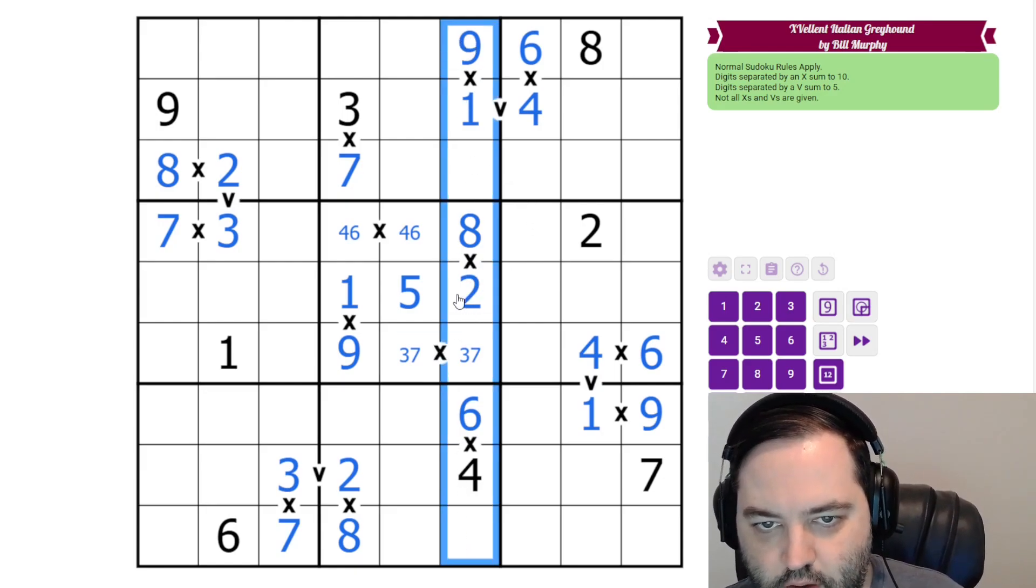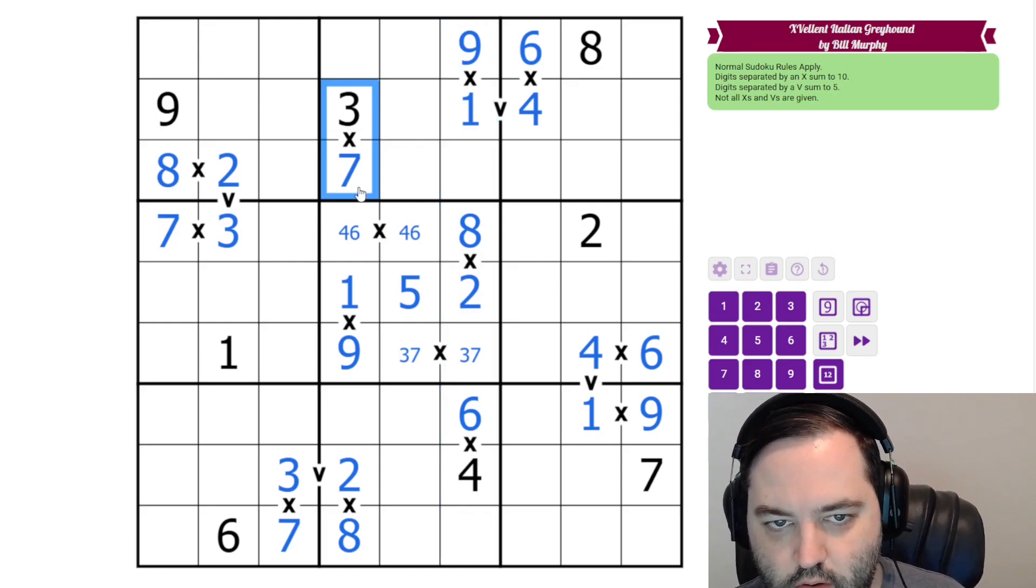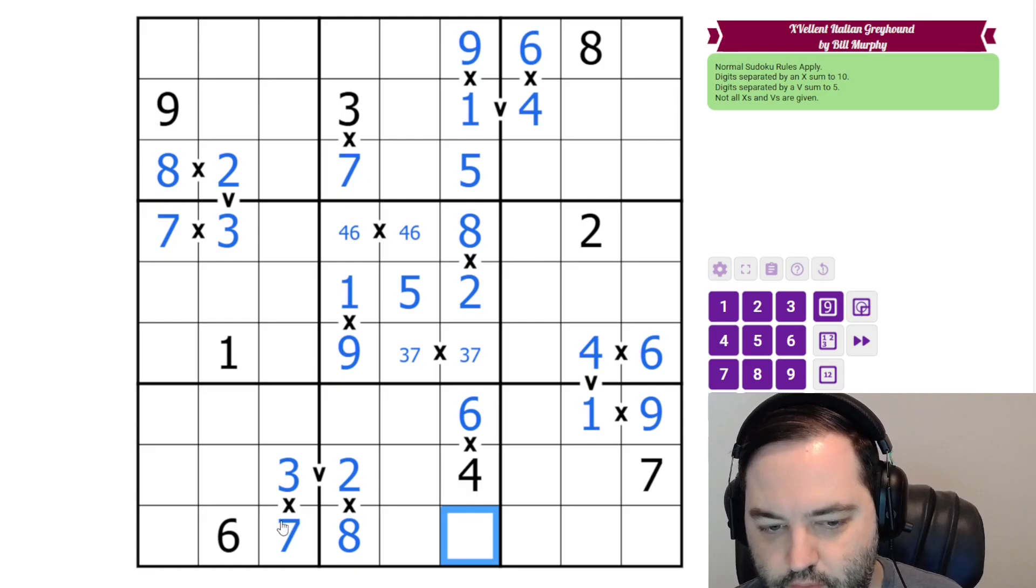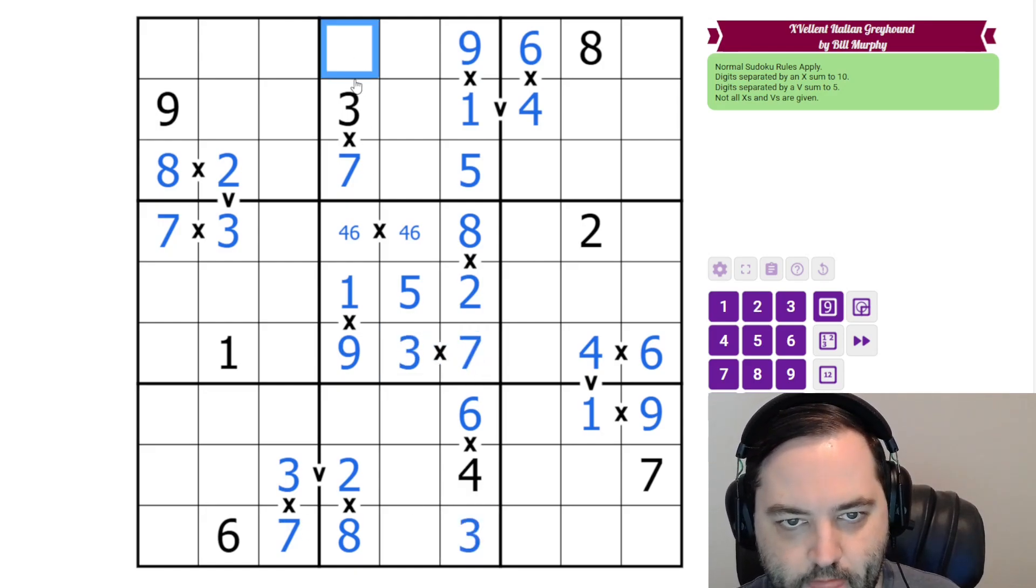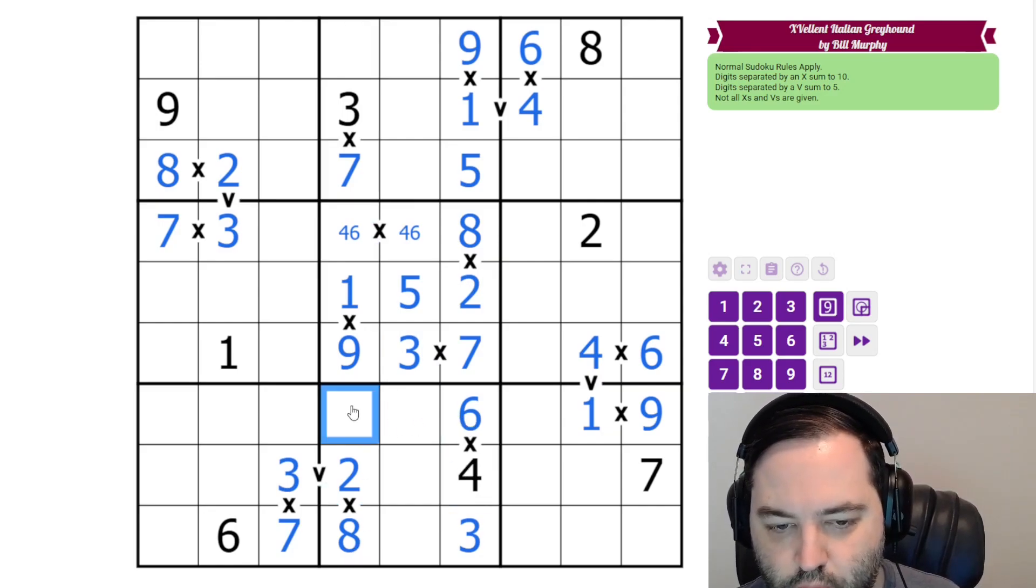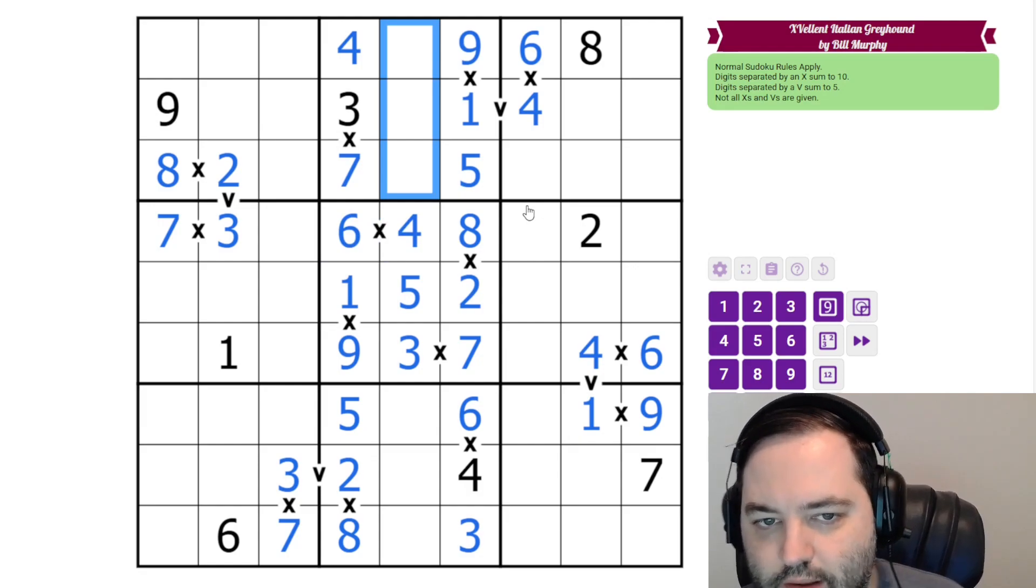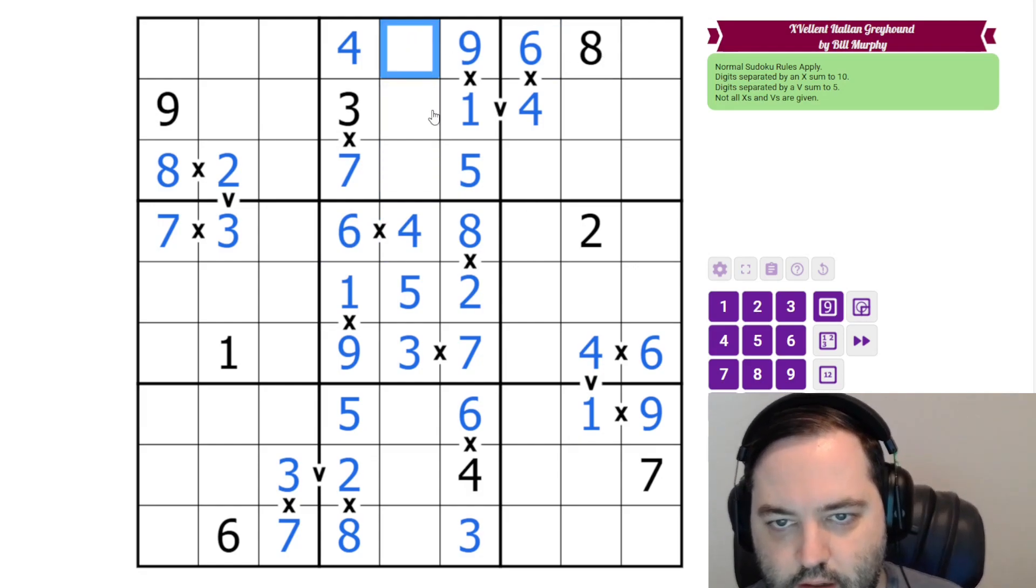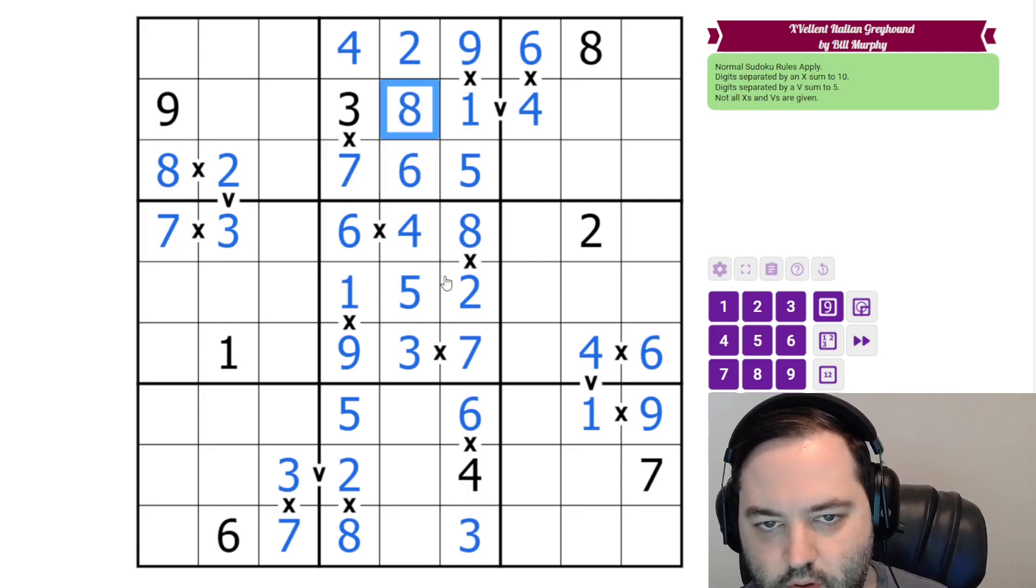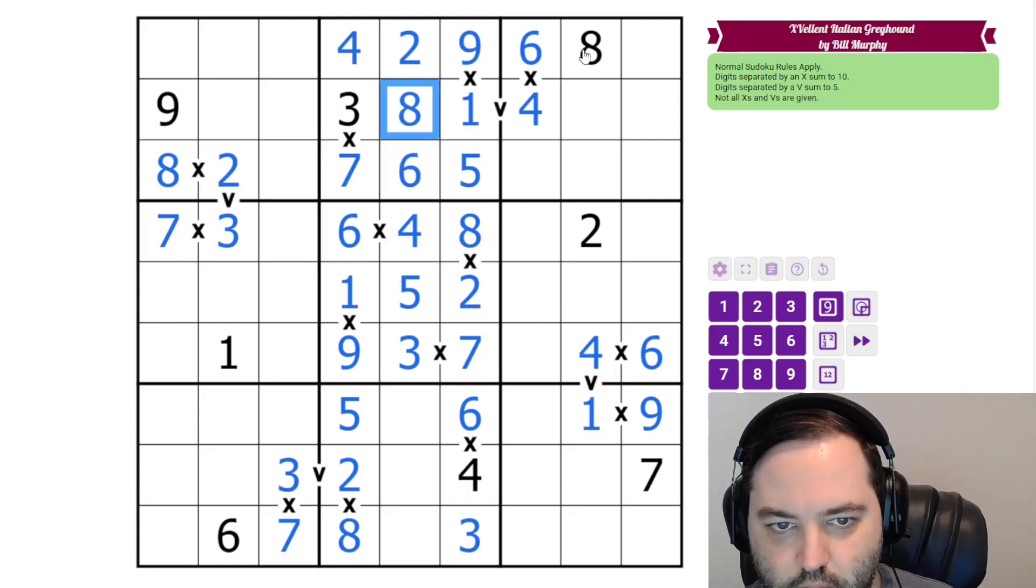Now if we look down the column, we have 3-7 in this box already, so the only thing this can be is 5. This is 3 or 7, but we have a 7 in the row, so we can resolve that. And then this column is similar. We have 4, 5, and 6 that we need in the column. 4 and 6 are in the box, and the 6 up here makes this a 4. We're left with 2-6 and 8 here. We have 6 and 8 in the row, and then we have 8 here in the row. And this is where the symmetry breaks down a little bit.